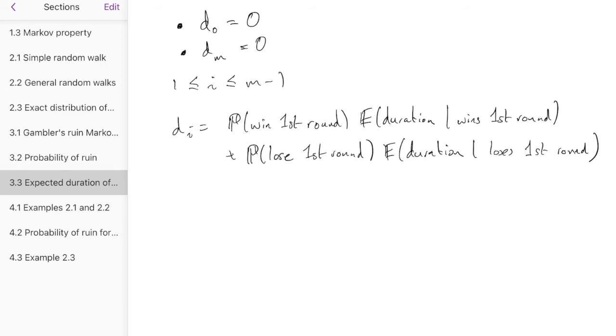So again, what can we say about each of these terms? The probability Alice wins the first round is p. What's the expected duration given she wins the first round? Well, there's the duration of the first round itself, of course, which is 1.